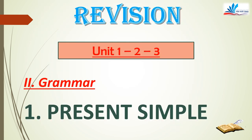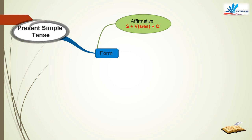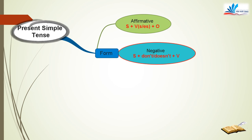Now we move to Part 2, grammar. Let's start with the present simple tense. In affirmative form, we have subject + verb base form, or verb with S or ES. In negative form, subject + don't or doesn't + verb base form. In interrogative form, do or does + subject + verb base form.